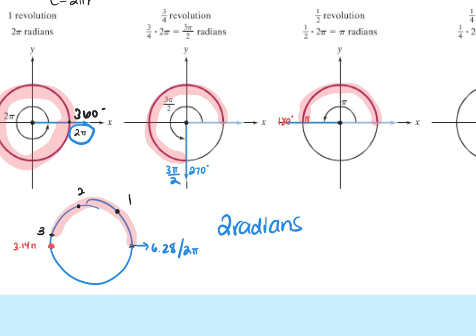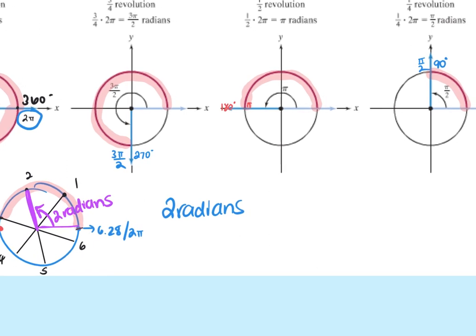Then drawing diameters going across the circle through the center gives us 4, 5, and 6 radians. So if asked to find an angle of 2 radians, it starts at 0 and ends about there. This doesn't happen a lot, but it will come up. It's way more common to have radians in terms of π, but if it's not in terms of π, you can still use this method.